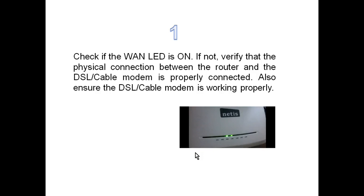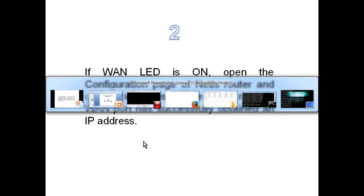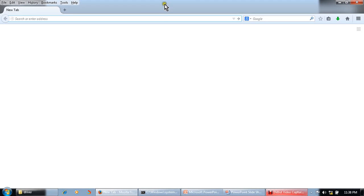If you are getting the WAN LED status but still not getting internet, we go to the second step. We will open the configuration page of this Netis router and check the status to see if the router's WAN port has successfully obtained an IP address or not. We will check the IP address on the WAN side.